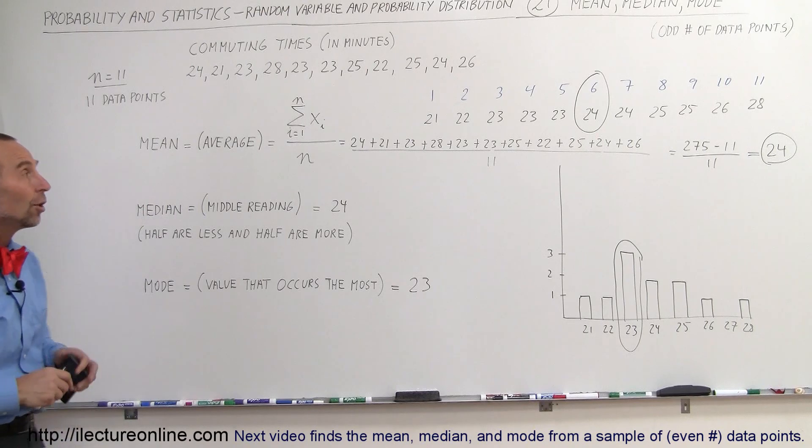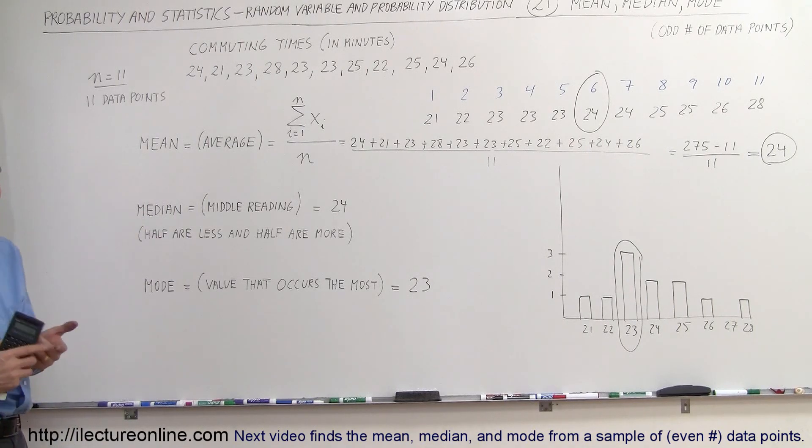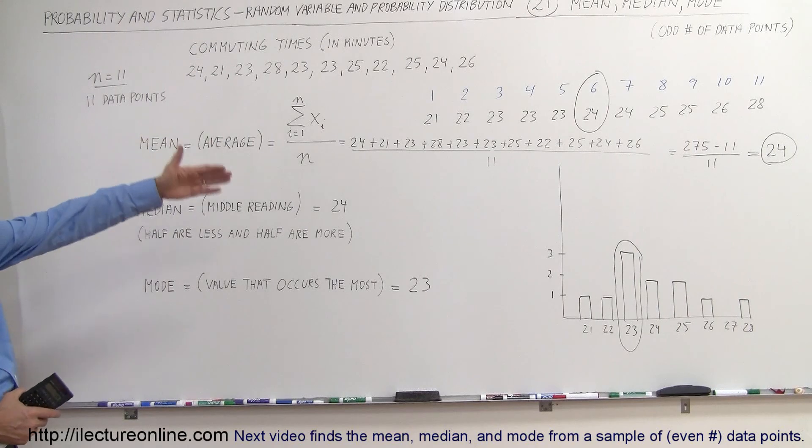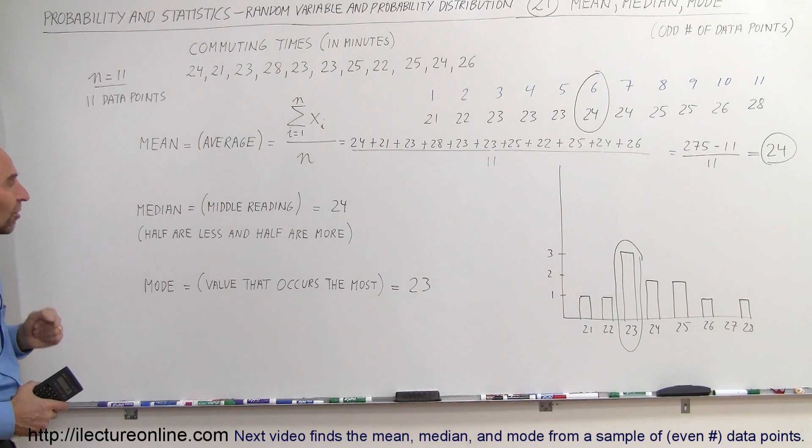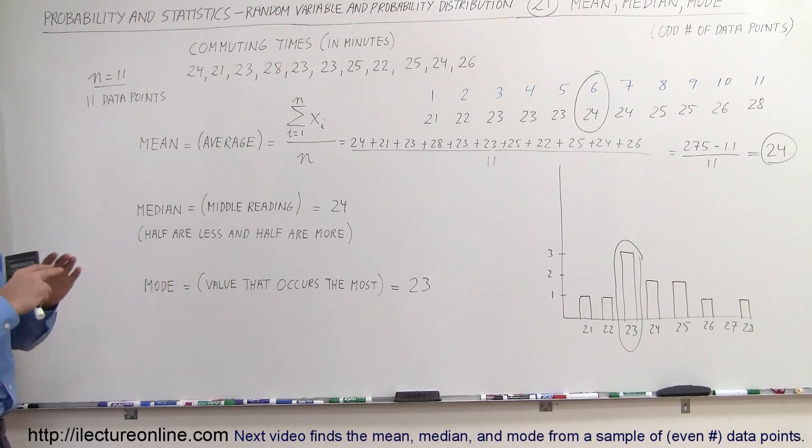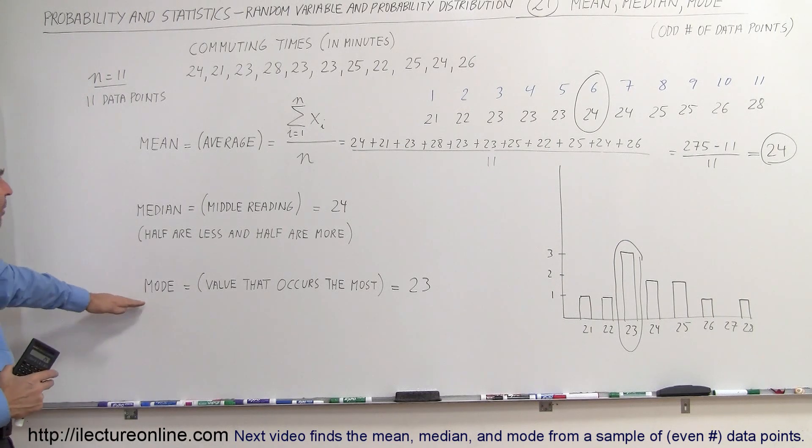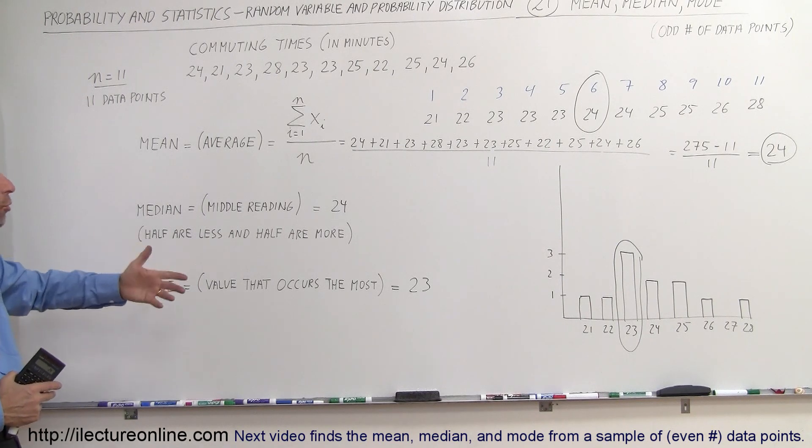So this hopefully gives you a good feel for how to calculate or how to find the mean, which is the average, the median, which is the middle reading, and the mode, which is the value that occurs the most. In this case, the average and the median was the same value because the distribution was fairly even. And the mode is the value that appears the most, which is 23.